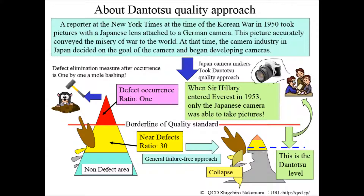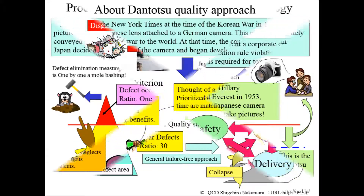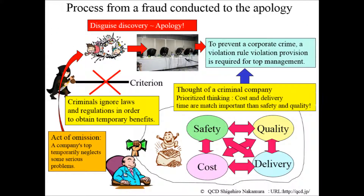However, companies that have caused misconduct did not take the strategy shown in this figure, and so they have caused CSR problems. CSR is corporate social responsibility. From now on, I will analyze the strategy of some companies that caused this social scandal. As everyone knows, what happens after corporate fraud has been discovered is as shown in this figure.